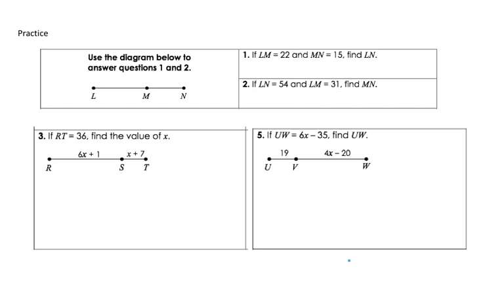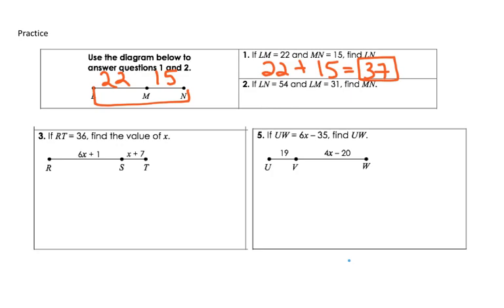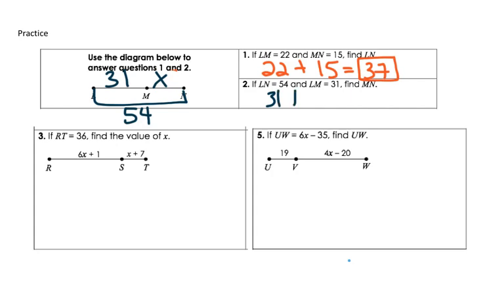Let's see how well you did. Question 1: LM is 22 and MN is 15. What is LN? Since LN is the whole line, take 22 plus 15 and you get 37. For the next question, LN is 54 — that's our whole line — and LM is 31. It wants MN, so 31 plus X equals 54. Subtract 31 from both sides and you get 23.